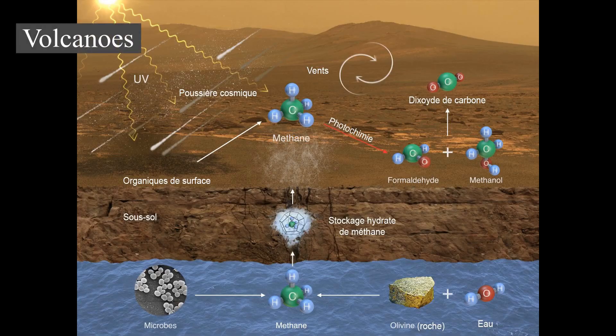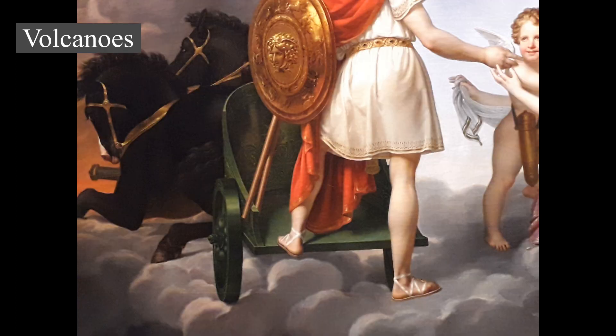The shield volcano Olympus Mons is an extinct volcano in the vast upland region Tharsis, which contains several other large volcanoes. The edifice is over 600 kilometers wide. Its local relief — from the foot of the cliffs at its northwest margin to its peak — is over 21 kilometers, a little over twice the height of Mauna Kea as measured from its base on the ocean floor.